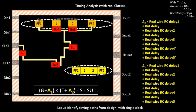We'll take this particular data path which we had already timed — we had found the combinational logic delay for this data path. The next step is to find out the launch clock network delay, the capture clock network delay, and adjust the equations accordingly. Delta 2 is the capture clock network delay and delta 1 is the launch clock network delay. Delta 1 is the real wire RC delay plus the buffer delay, repeated along the path until flip-flop 1's clock endpoint.